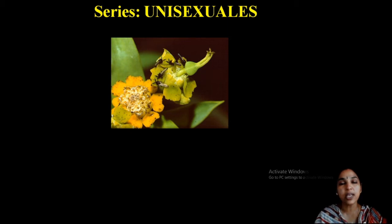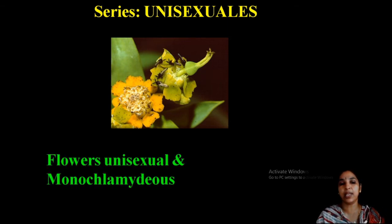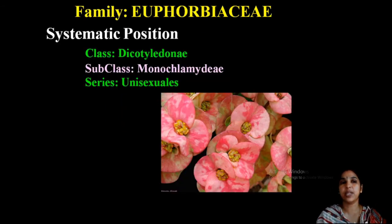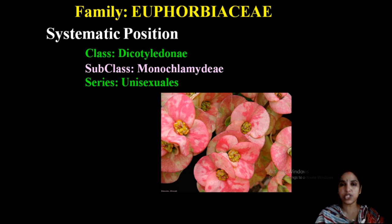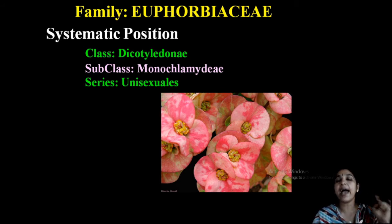What is unisexual? It contains female flowers and male flowers separately. Flowers are unisexual and monochlamydous — that is an important point. The systematic position of Euphorbiaceae is: it comes under Dicotyledonae, Monochlamydae, and Unisexuals.